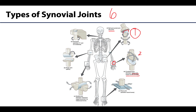Skipping to the saddle joint — it is actually pretty similar to the condyloid joint in terms of the type of movements allowed, but the saddle joint will have a bit greater range of motion. One of the articular surfaces in a saddle joint will be, as its name suggests, saddle-shaped, and the other bone will fit into that saddle-shaped bone. The first carpometacarpal joint is an example of a saddle joint, and in fact it is one of the only examples of a saddle joint.